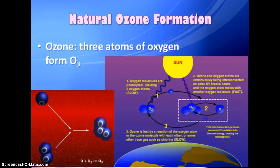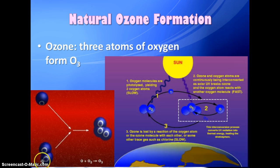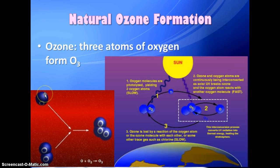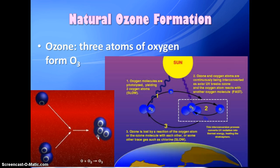Here's how ozone forms: O2 molecules in the upper atmosphere receive solar energy and break apart into individual oxygen atoms. When one of those oxygen atoms collides with an O2 molecule, you get ozone — O3.